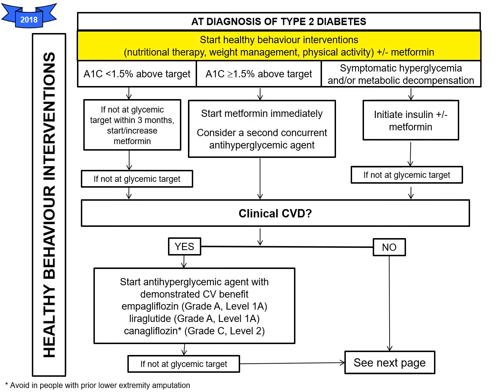At the diagnosis of type 2 diabetes, you start healthy behavior interventions including nutritional therapy, weight management, physical activity, plus or minus metformin. If the A1c is less than 1.5% above target and not at glycemic target within three months, you start or increase metformin. If it's greater than 1.5% above target, you start metformin immediately and consider a second concurrent antihyperglycemic agent.